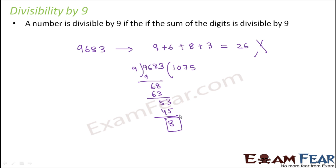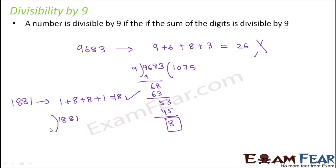Let's take another example: the number 1881. The sum of the digits is 1 + 8 + 8 + 1 = 18, and 18 is divisible by 9, so 1881 should be divisible by 9. Verifying by actual division: 9 goes into 18 twice (18), then into 81 nine times (81), giving a remainder of 0 — so 1881 is exactly divisible by 9.